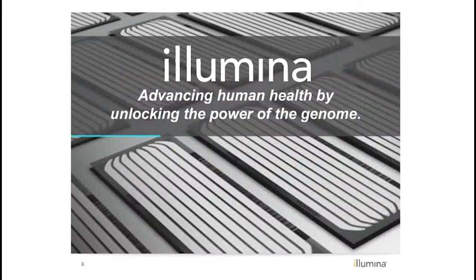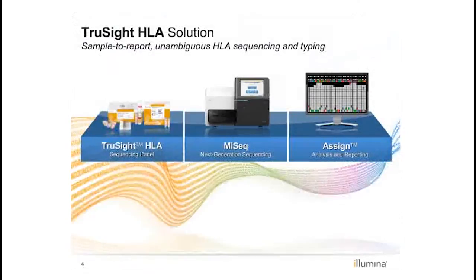For those of you unfamiliar with Illumina, our mission is to advance human health by unlocking the power of the genome, and we decided to pick the most challenging region of the genome for this product. TruSight HLA is a single solution for high-resolution, unambiguous, phase-resolved HLA sequencing. It includes the TruSight HLA sequencing panel with all reagents necessary for library preparation and loading DNA onto the MiSeq, and the Connexio assigned software for analysis and reporting.